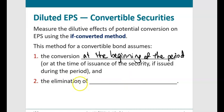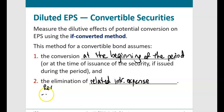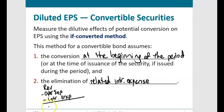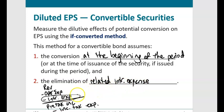If bonds were converted and we had stock instead, we need to eliminate the related interest expense. Consider the income statement: revenues minus operating expenses minus interest expense minus income tax expense gives net income. Because interest expense reduces pre-tax income, there's a tax benefit for interest expense. So when we eliminate interest expense, we add it back net of taxes — after-tax bond interest expense.